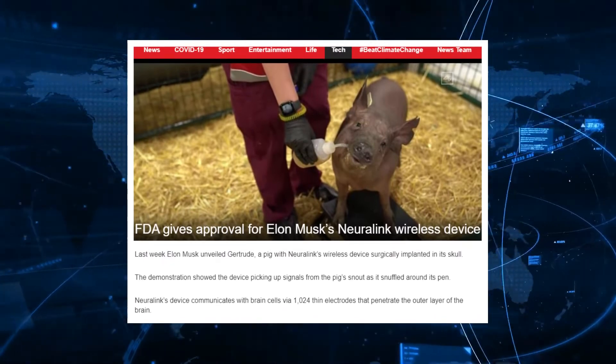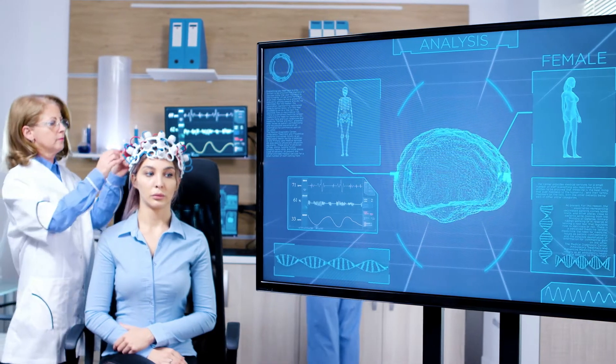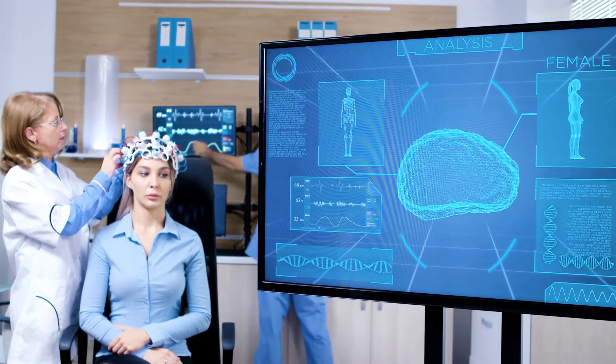In 2020, Neuralink obtained an FDA breakthrough device designation, which allows limited human testing under the FDA guidelines for medical device only. Also, 3 of the 8 founding scientists remained at the company because of internal conflict, in which rushed timelines have clashed with science's slow and incremental pace. This same year, Neuralink started revealing its technology for the world to see through a video.